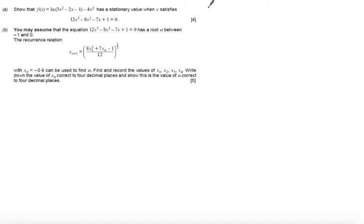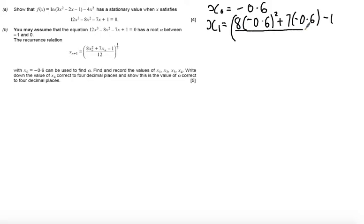So x0 equals minus 0.6. To get x1 I'm going to substitute that into my recurrence relationship so I get 8 times minus 0.6 squared plus 7 lots of minus 0.6 minus 1 all over 12.